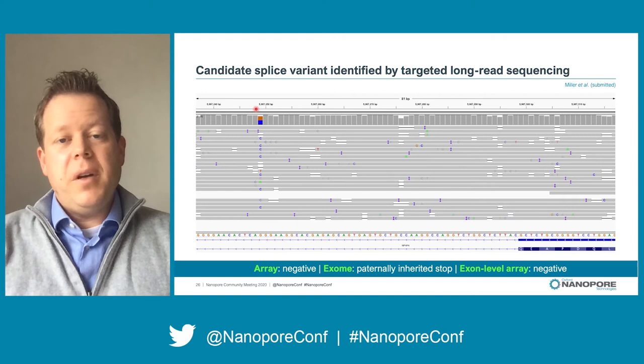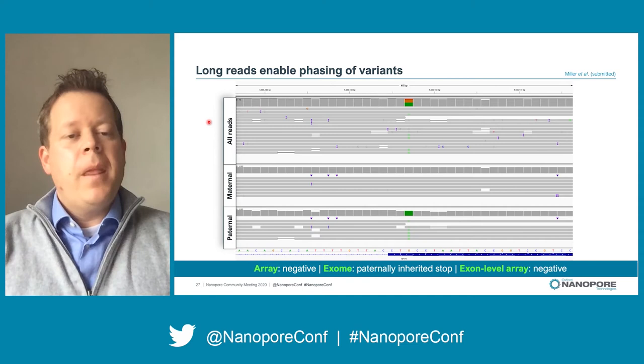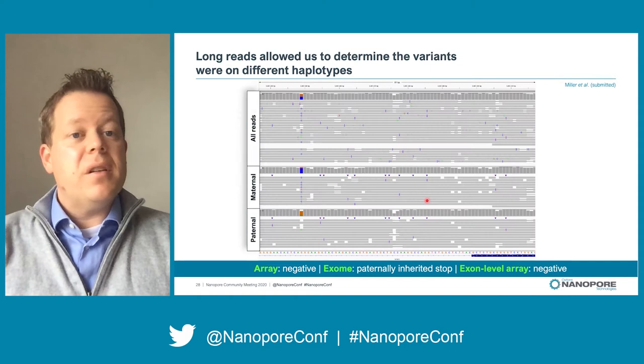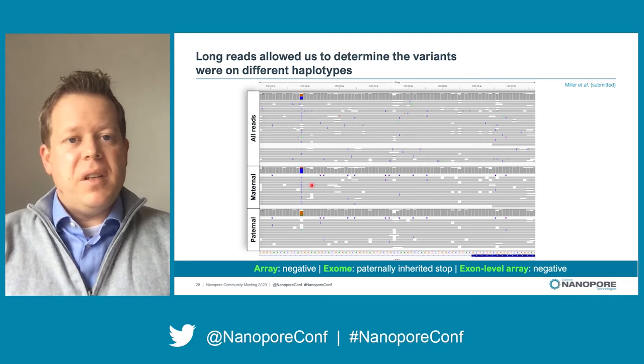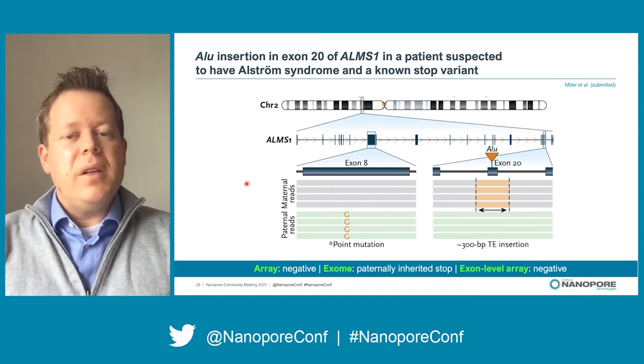Fortunately, we were able to identify a good candidate for the second hit — an intronic variant predicted by SpliceAI to affect splicing. Because we have long reads we can phase the data into different haplotypes and determine if the two variants are on the same or different chromosomes. I phased this using LongShot — showing all reads in the top track, the maternal haplotype in the middle, and the paternal haplotype on the bottom — and you can see the previously known inherited stop. Going to the intronic variant, we see it's on a different haplotype than the stop. We confirmed this is a maternally inherited variant using PCR and Sanger, and then used qPCR to determine that it does in fact affect splicing.